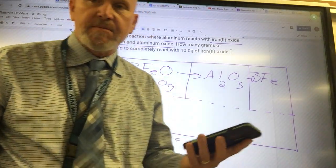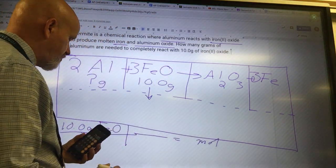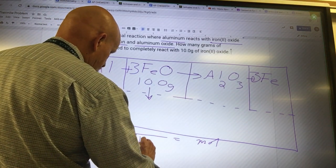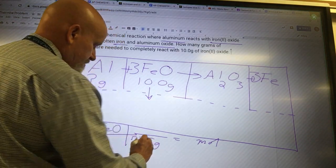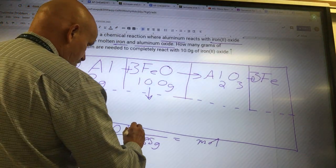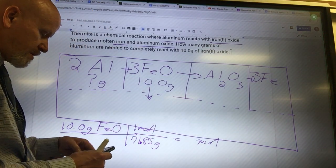So what I got for the molar mass of iron oxide is 71.845 grams per mole. So 71.85 grams per one mole.